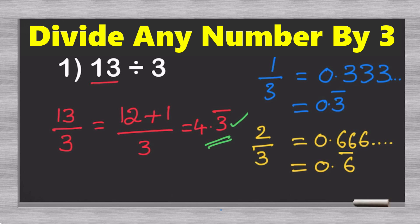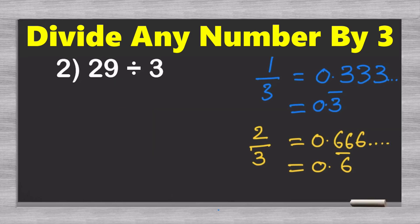So, let's move on to our next example. So now, as we can see here, we are on our second example. 29 divided by 3. And I've already written down the initial fraction here.